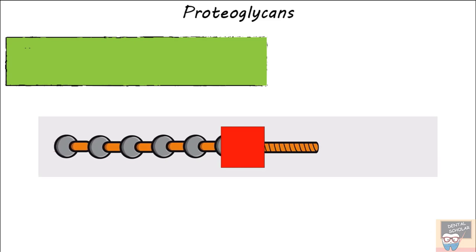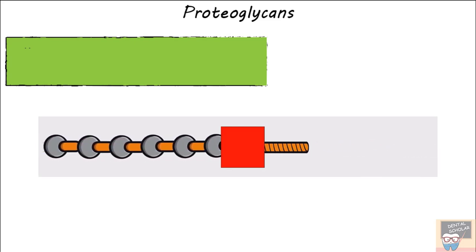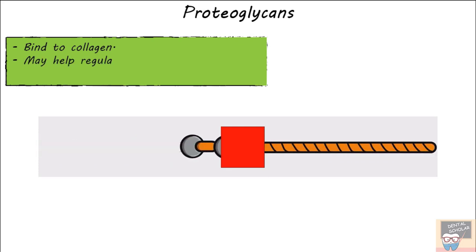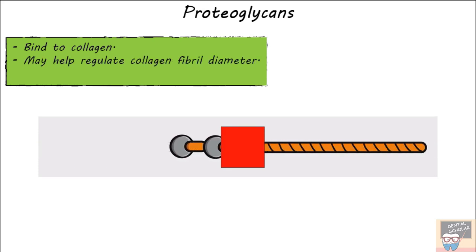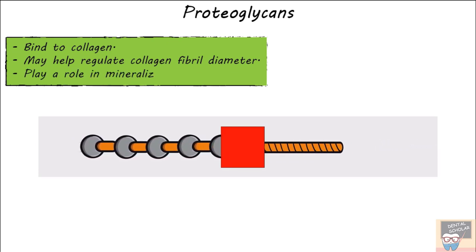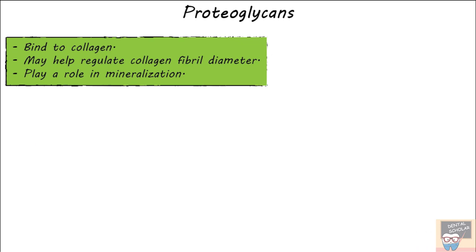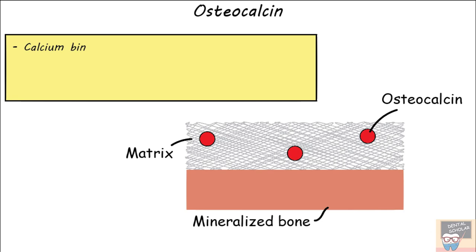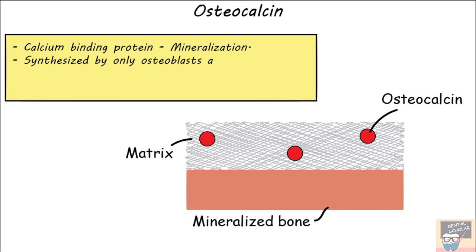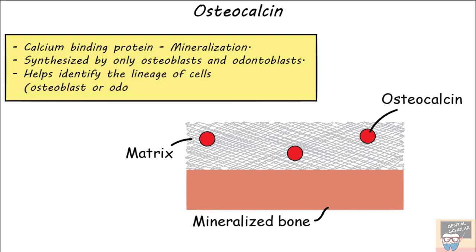Proteoglycans bind to collagen, which may help regulate the collagen fibril diameter, and they also play a role in mineralization of the osteoid. Osteocalcin is a calcium-binding protein that helps in mineralization. Since it is synthesized only by osteoblasts and odontoblasts, it can help identify the lineage of cells — if osteocalcin is found in a tissue, it indicates derivation from osteoblasts or odontoblasts.